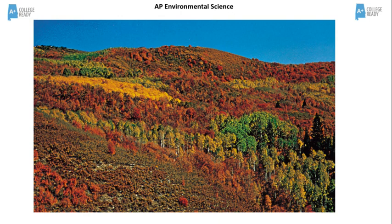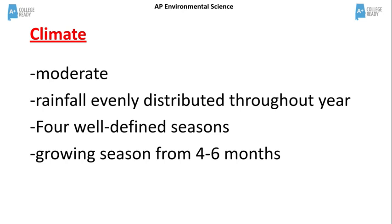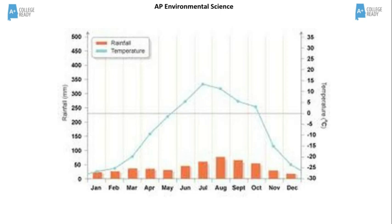The climate in the temperate deciduous forest is moderate, with rainfall evenly distributed throughout the year. There are four well-defined seasons and the growing season is longer than in the taiga and tundra, usually four to six months. In this climate diagram, you see the higher temperatures and more evenly distributed rainfall throughout the year.